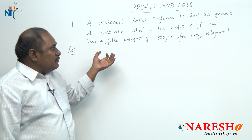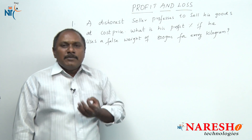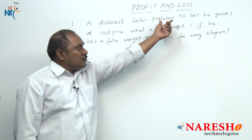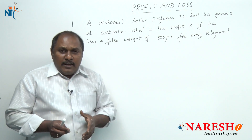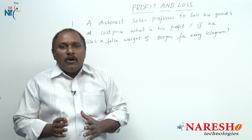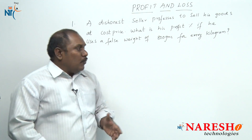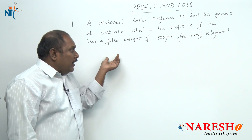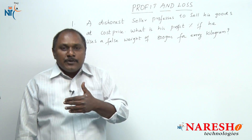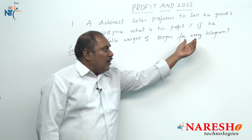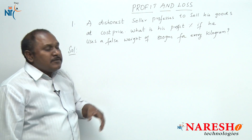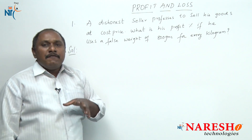In this problem, nowhere is money mentioned. A dishonest seller professes to sell his goods at cost price. Generally, if a shopkeeper sells his goods at cost price, he will not be getting any profit or loss. So in order to get profit, the shopkeeper is cheating the customer — by using a false weight, that is, instead of selling 1 kilogram he is selling 800 grams. There are different ways to solve this problem; one way is by formula.